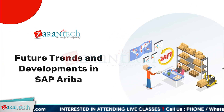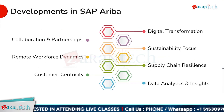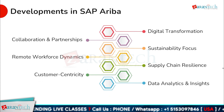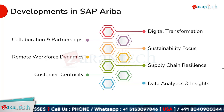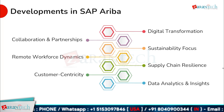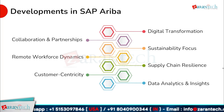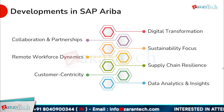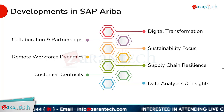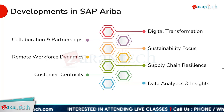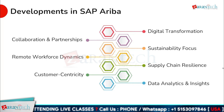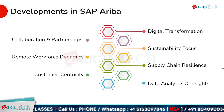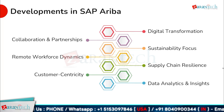SAP Ariba is constantly evolving to meet the changing needs of businesses. One key development is the platform's focus on digital transformation, helping businesses automate and streamline their procurement processes. Sustainability is also a growing focus, with SAP Ariba providing tools to help businesses monitor and reduce their environmental impact. Supply chain resilience is another area of development, with SAP Ariba providing tools to help businesses mitigate risk and ensure continuity of supply. Data analytics and insights are also becoming increasingly important, with SAP Ariba providing advanced analytic tools to help businesses make data-driven decisions. Collaboration and partnerships are also key themes, with SAP Ariba enabling businesses to work more closely with their suppliers. And finally, SAP Ariba is adapting to the needs of a remote workforce, providing tools for remote collaboration and communication.